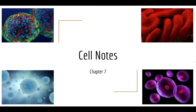Today you're going to take Cornell notes on cells. This is chapter seven in your textbook, so make sure you draw your line about an inch from the margin, take the notes on the right side of the line, and then when you're done you're going to put your questions on the left and a summary that has a minimum of five sentences at the end.